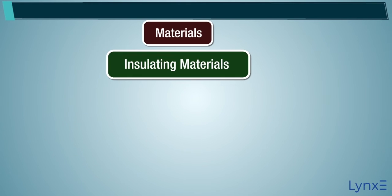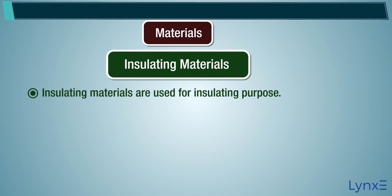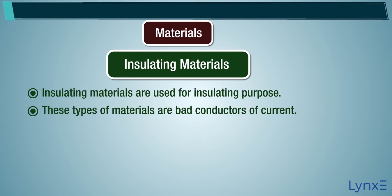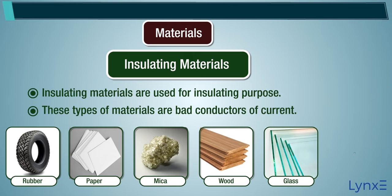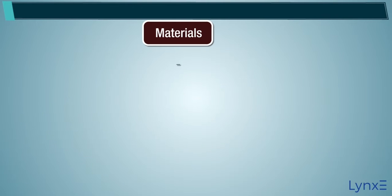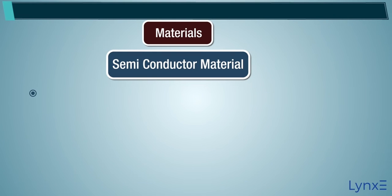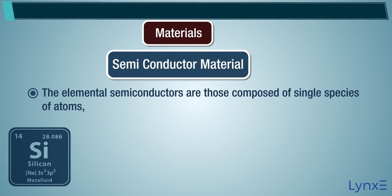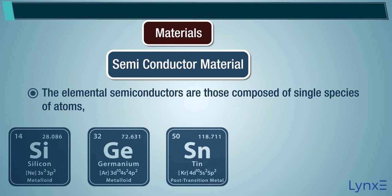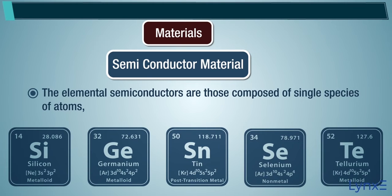Insulating Materials are used for insulating purposes. These types of materials are bad conductors of current. For example, rubber, paper, mica, wood, glass, and cotton. Semiconductor Material: The elemental semiconductors are those composed of single species of atoms, such as silicon, germanium, and tin in column 4, and selenium and tellurium in column 6 of the periodic table.